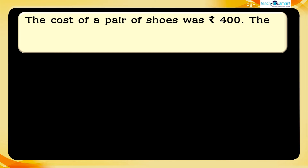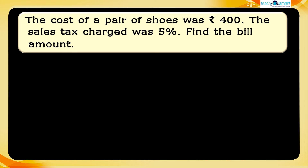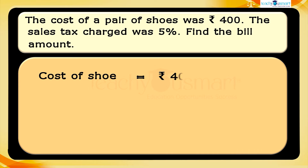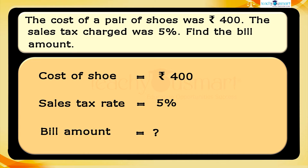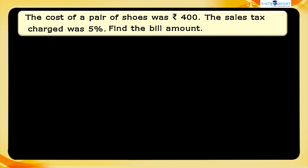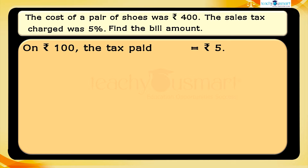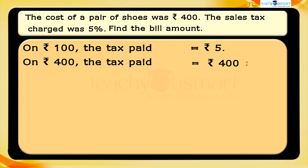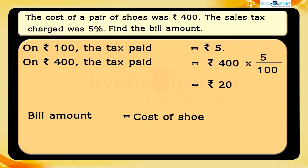A sales tax is a tax charged by the government on the sale of an item. Let's do an example. The cost of a pair of shoes was 400 rupees and the sales tax charged was 5%. We need to find the bill amount. 5% sales tax means on 100 rupees the tax paid equals 5 rupees. Therefore, on 400 rupees, the tax paid equals 400 × 5 ÷ 100 = 20 rupees.